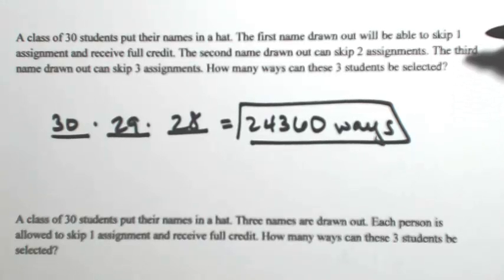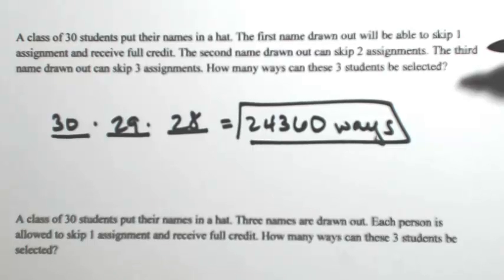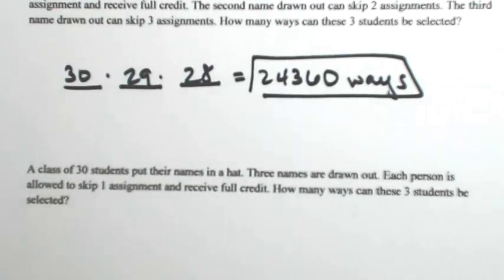the first name drawn out got something different from the second name. The second name got something different from the third name, so the order in which these winners were selected matters. Let's see what happens when the order doesn't matter.